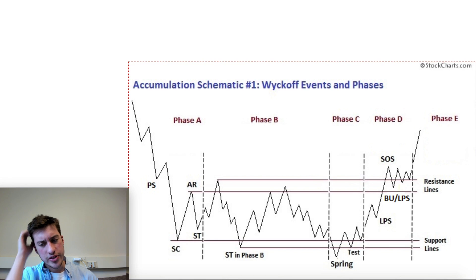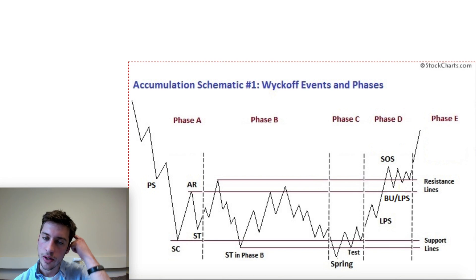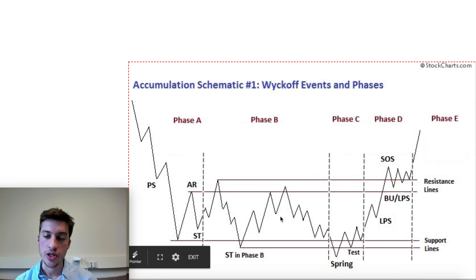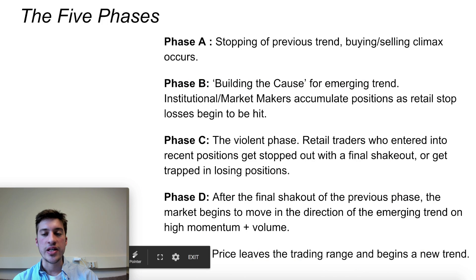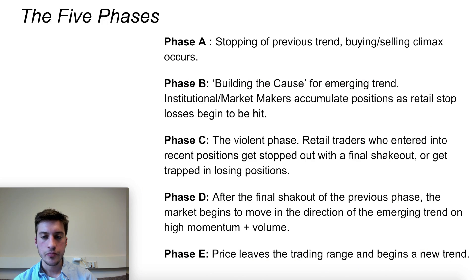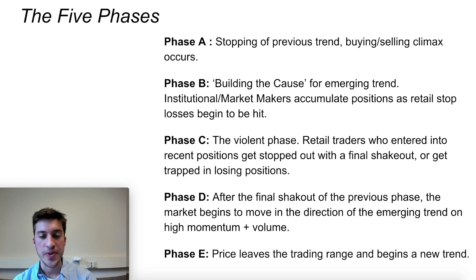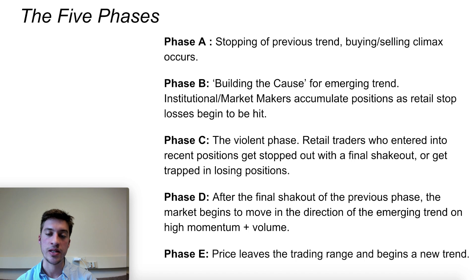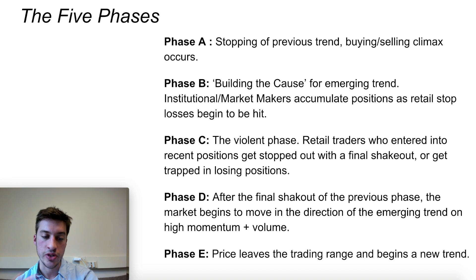Looking at the accumulation schematic one for the first Wyckoff event: Phase A, if we're talking about a downtrend turning into consolidation and then into an uptrend, phase A is going to be the selling climax — this is where a lot of retail traders are market selling and just giving up on the asset. Phase B is going to be known as building the cause for the emerging trend, where institutional players and market makers begin to find an opportunity to accumulate long positions as retail stop losses begin to be hit. Those retail stop losses, if they go long, are triggered as sell market orders — they sell right to the institution's limit, exactly what they want to see.